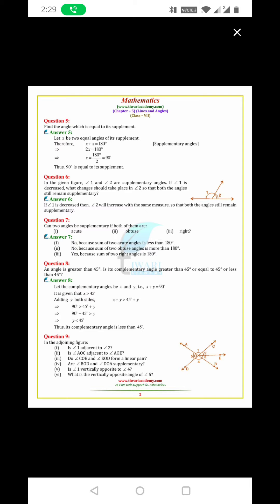Now question number 5. This is supplementary. So X plus X is equal to 180. 2X is equal to 180. X is equal to 180 by 2 is equal to 90 degree.